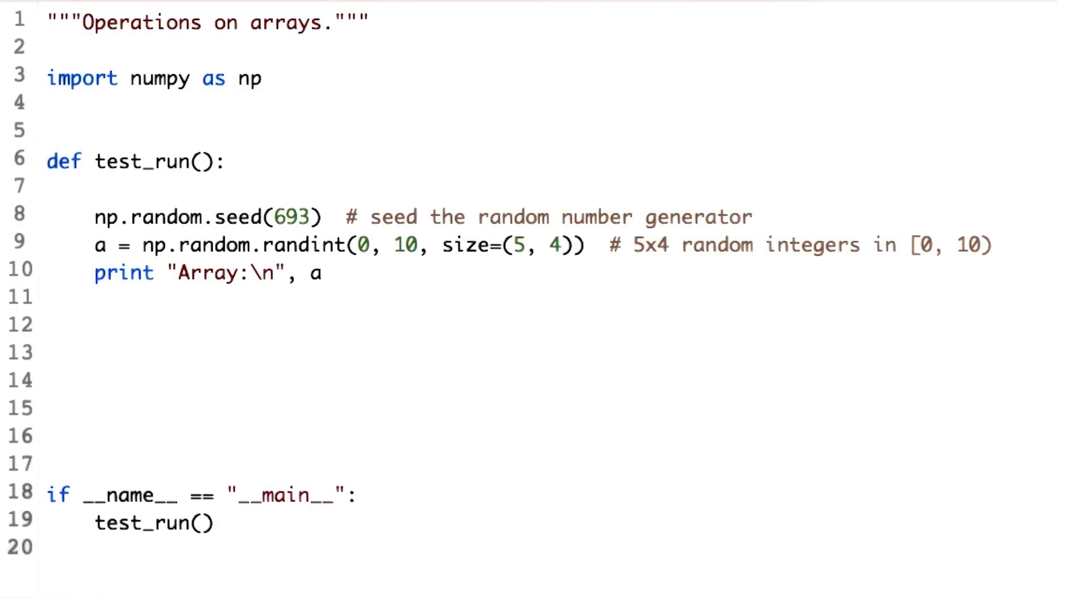We can also sum in a specific direction of the array. What I mean by direction is along rows or columns. NumPy gives this direction a special name. It is called axis.